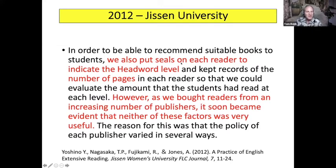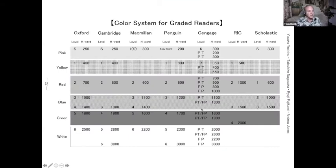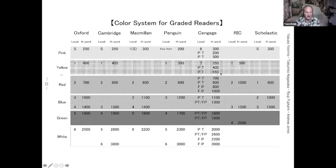I found this — it's an eight-year-old study at Jisen University — about what they were trying to do when they were arranging their books. They put seals on each reader to indicate the headword level and kept records of the number of pages in each reader. When they bought more readers, it became evident that neither of these factors were very useful for record keeping or for their students. They arranged them into six levels, which probably isn't enough, because especially the yellow and the red levels have quite a distribution of different headword counts, meaning a student could go to what they think is the correct level and end up with something too difficult.